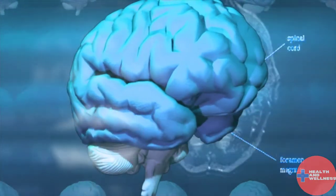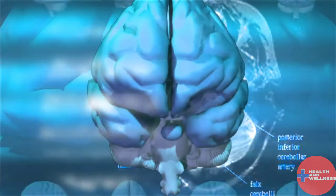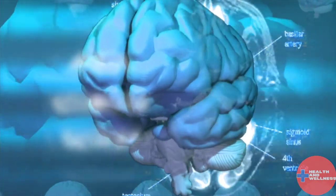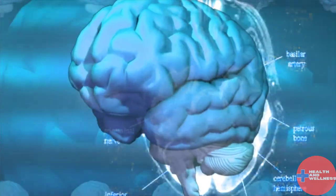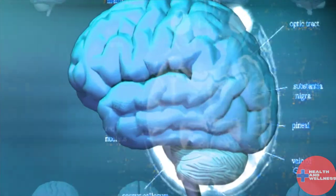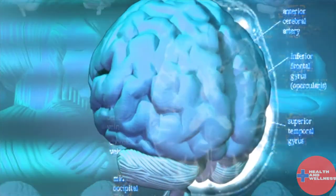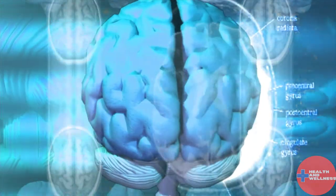Unlike delirium, dementia affects areas of the brain that control higher mental processes. The impairments are the same as in delirium, but in dementia they are more severe.